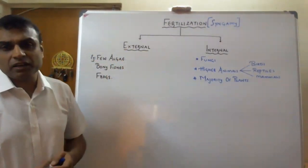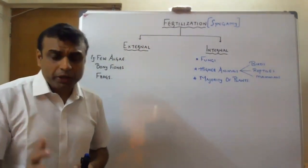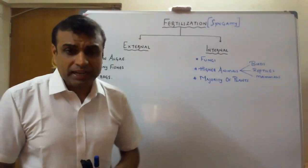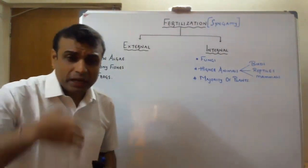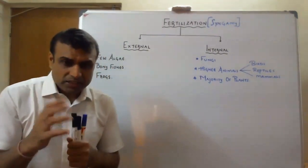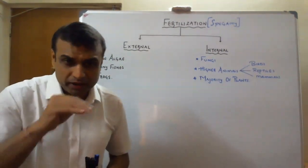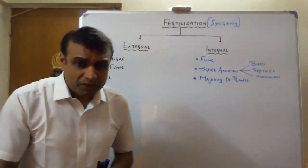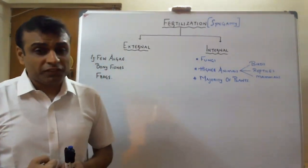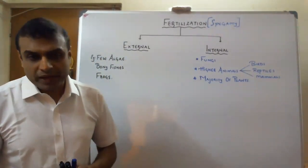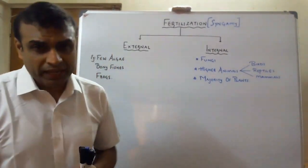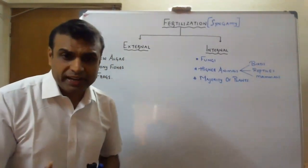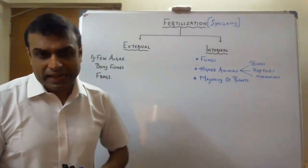The disadvantage of external fertilization is that the organism must produce a large number of gametes, so energy is wasted in preparing thousands of gametes. Many gametes are destroyed during fertilization. Also, the offspring formed is outside the female body and is vulnerable to attack from predators, so the number of offspring produced is increased to compensate.